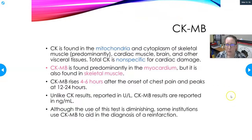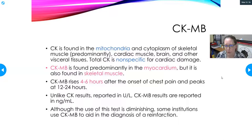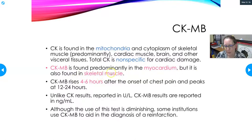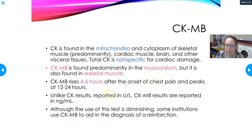CK-MB is another test that can be done, though not all labs use it — it depends on physician preference. CK is found in the mitochondria and cytoplasm of skeletal muscle, cardiac muscle, brain, and other tissues; total CK is non-specific for cardiac damage. CK-MB, however, is predominantly found in the myocardium, though small amounts exist in skeletal muscle. It rises four to six hours after the onset of chest pain, peaks at 12 to 24 hours, and clears within a few days.